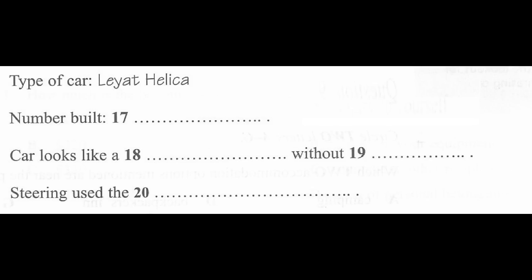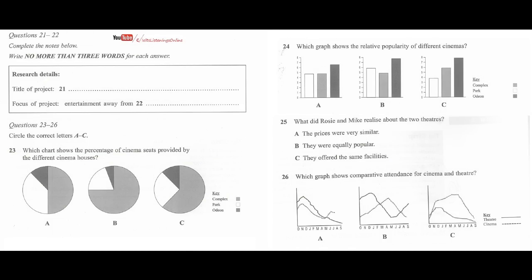That is the end of Section 2. You now have half a minute to check your answers. Now turn to Section 3 on page 33. Section 3. In this section, you will hear a discussion between two students, Rosie and Mike, and a university tutor. In the first part of the discussion, they are talking about a survey they have conducted on local entertainment. First, look at questions 21 to 26.